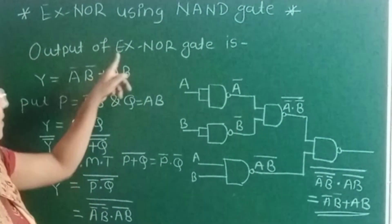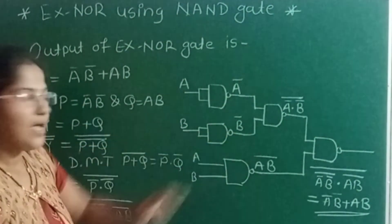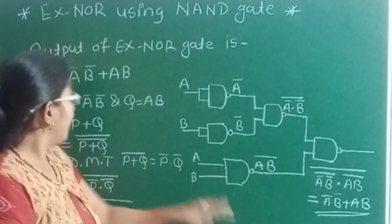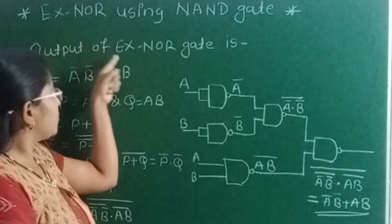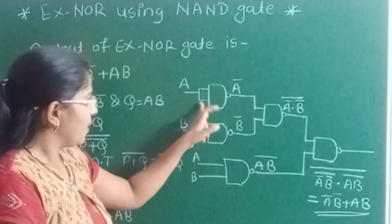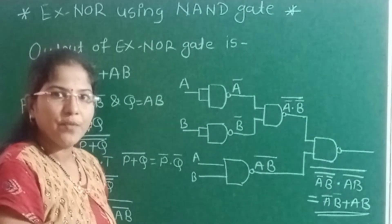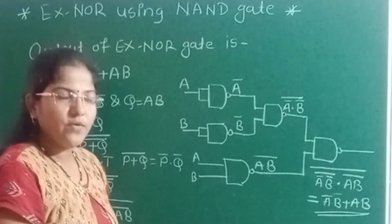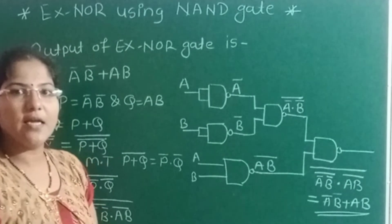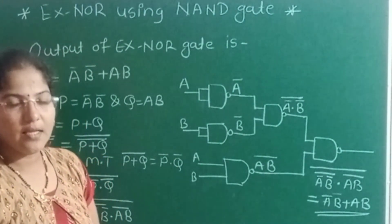This is how we can implement the XNOR gate by using only the NAND gate. To implement one XNOR gate, 1, 2, 3, 4, and 5 NAND gates are required. We can design any circuit by using only NAND gate, and that is why the NAND gate is also called the universal gate.